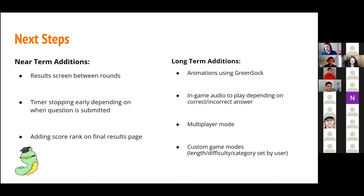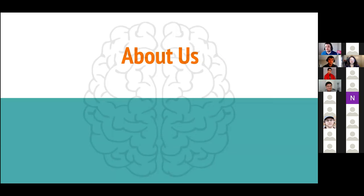Towards the beginning of the project, we thought about adding GreenSock animations to our game. However, we found that learning that on top of building this full app was a little too much to tackle inside of two weeks, so we decided to pass that off into a longer-term bucket. We'd like to include stuff such as animated question transitions and a little more flair here and there. We also want to look into adding in-game audio for correct or wrong answers, add WebSockets for a multiplayer mode, as well as allowing for custom game modes — so if you wanted a really long, hard game, or a really short, easy game specifically about geography, we'd like to implement those features beyond our three curated preset modes.